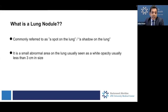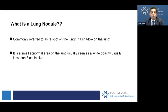So what is a lung nodule exactly? It's commonly referred to as a spot on the lung or a shadow on the lung when you get a report and your primary care physician or the ordering physician goes over it. In vague terms, it is a small abnormal area of the lung, usually seen as a white opacity, usually less than three centimeters in size — that's slightly smaller than a quarter.